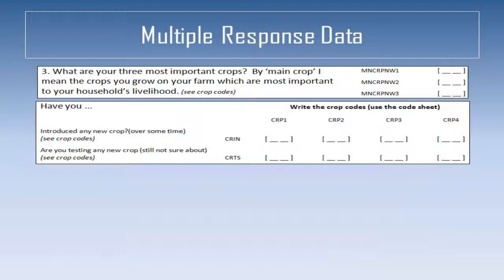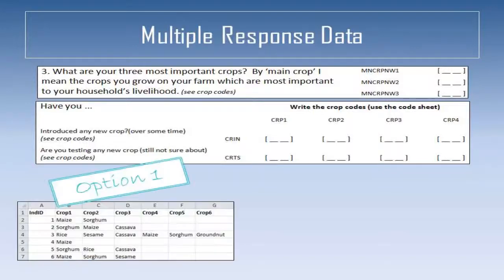Multiple response data is usually the result of responses being a list, for example name the main types of crops grown on your land or what livestock do you keep. The first option for storing this data is for the number of variables or columns being the maximum number of responses given by any individual. The first response given by a respondent is then entered into the first variable, the second response into the second variable and so on.